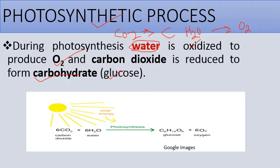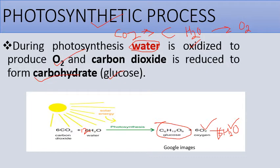In the reaction of photosynthesis, there are 12 molecules of water, and also production of six molecules of water. In the presence of sunlight, carbon dioxide and water combine to form glucose, oxygen, and water. This is the basic reaction of photosynthesis.